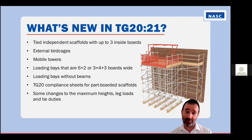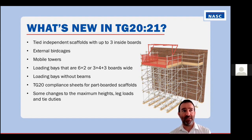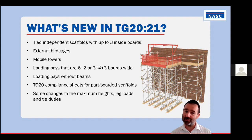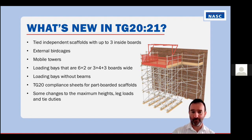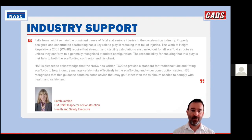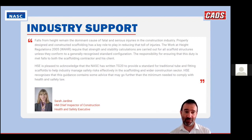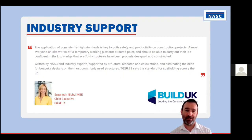There have also been changes to the maximum heights, leg loads, and tie duties reported by TG2021 compliant sheets. These are largely done to make it easier for a temporary works engineer to manually check the results, whereas previously in TG20:13 some results required quite complicated structural analysis. We've been pleased to have support from the HSE, who provided a foreword for TG2021, and Build UK, who also provided a foreword.